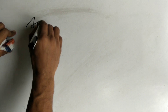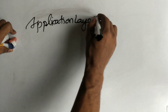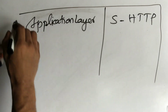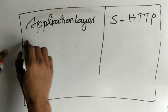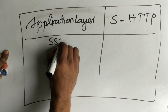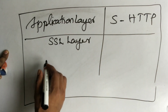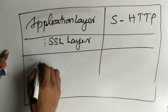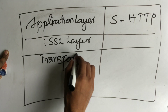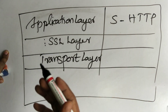Let's distinguish between these two using the network layers. SHDTP works at the application layer. You can think of the SSL layer in between the application layer and the transport layer — there is an imaginary SSL layer between the transport layer and the application layer. That is the position where SSL works.